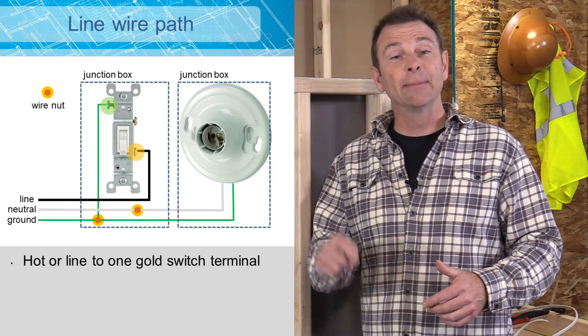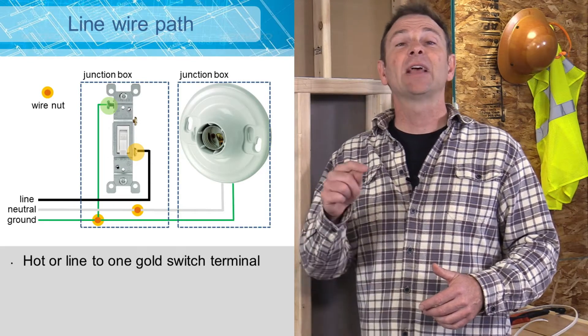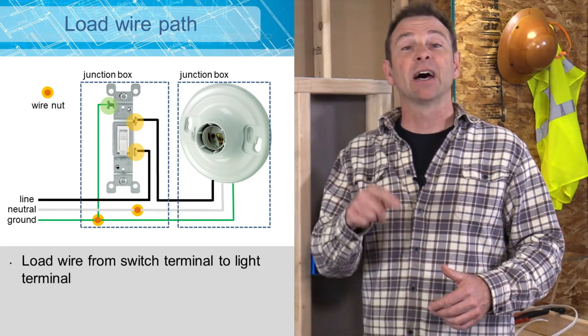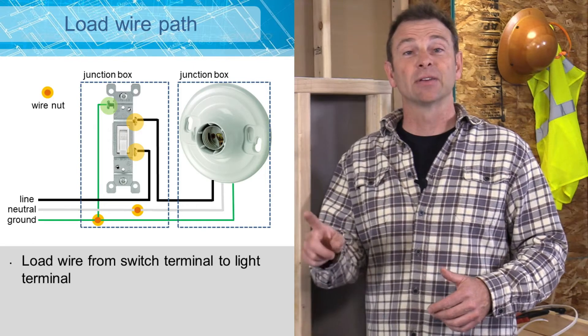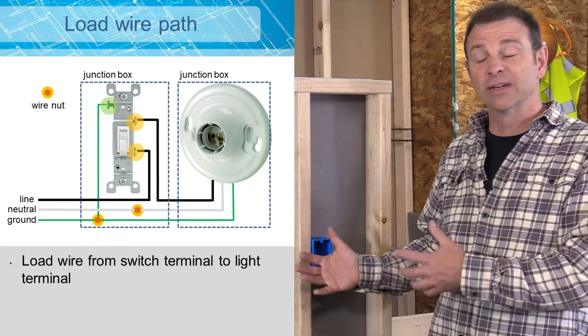You're going to have a line that's going to come in. It's going to connect to one terminal on this switch. And then you'll have another black wire that connects to the other terminal that we'll leave out to go to the light fixture. So I've got a mock-up here. Let's go ahead and demonstrate that circuit here.